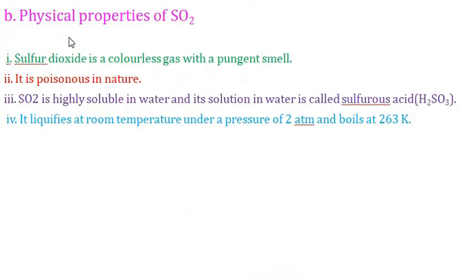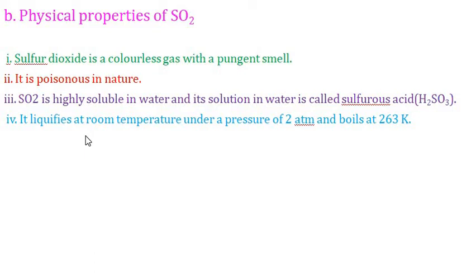Physical properties of sulfur dioxide: SO2 is a colourless gas with a pungent smell. It is poisonous in nature. It is highly soluble in water, and its solution is called sulfurous acid (H2SO3). It liquefies at room temperature under pressure and boils at 263 K.